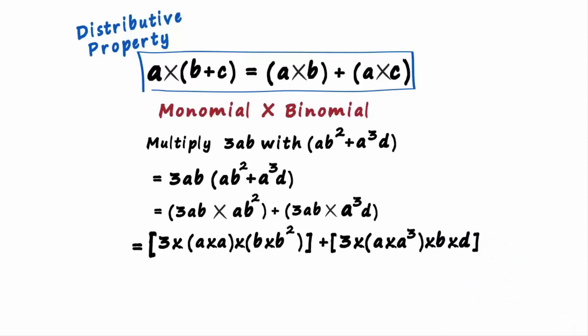Using the product law, this will be a squared and this will be b cubed. This entire expression becomes 3a squared b cubed.